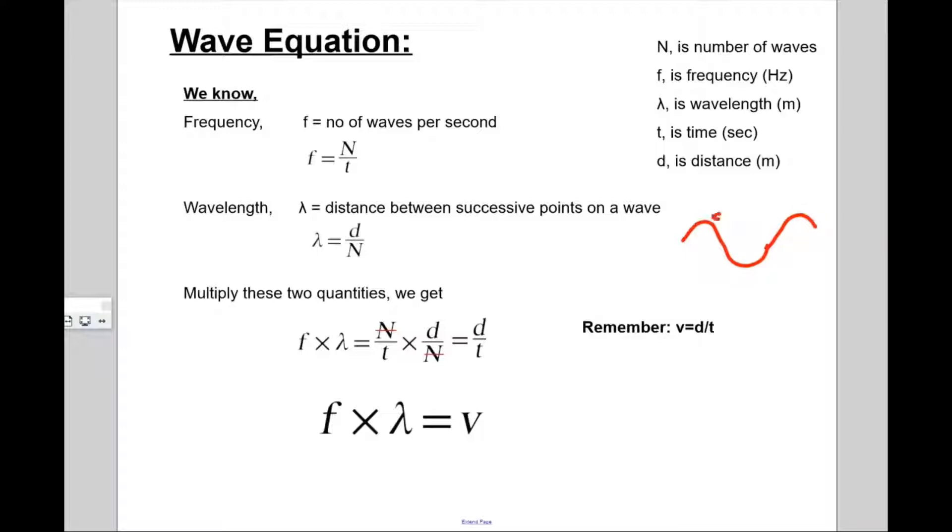So that distance, that horizontal distance is called your wavelength. So to generalize that, we can write it as lambda, it is the distance.